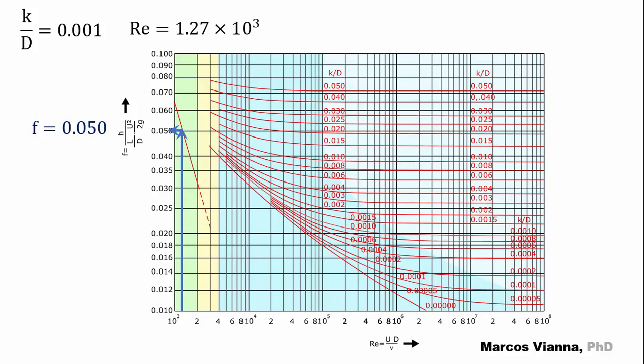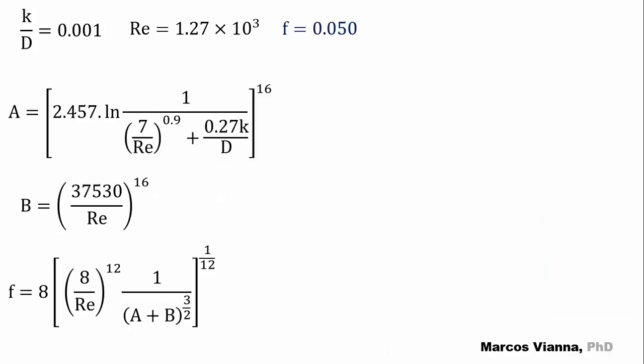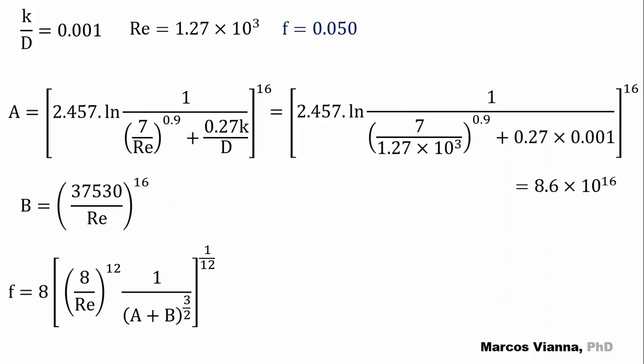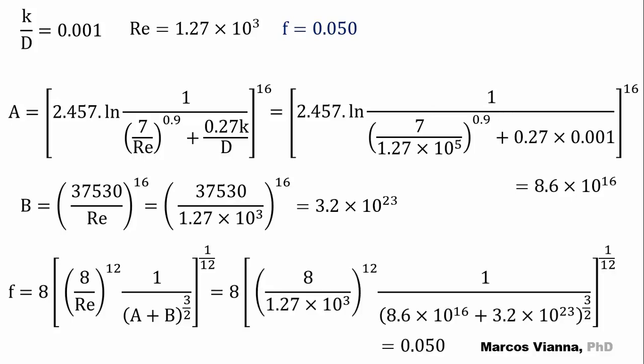Observe that the flow lies within the laminar zone. We find f equals 0.050. Let's solve using the Churchill formula. First, we calculate A, then we calculate B, and this is what we find for f. The same value that we found on the Moody diagram.